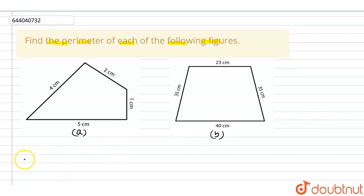So first of all, finding out the perimeter of figure A. The perimeter of figure A will be equal to, now we know that perimeter is sum of all sides. So sum of all sides.